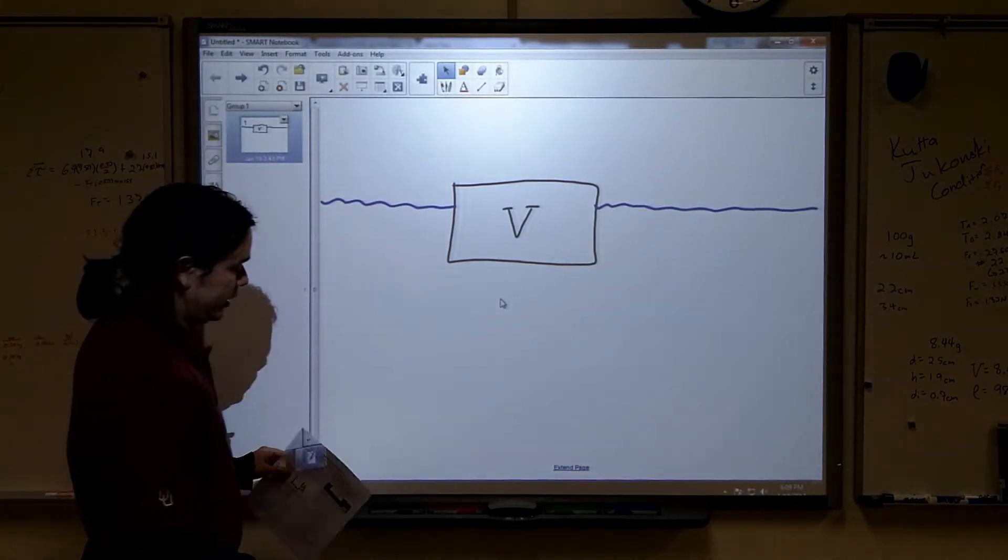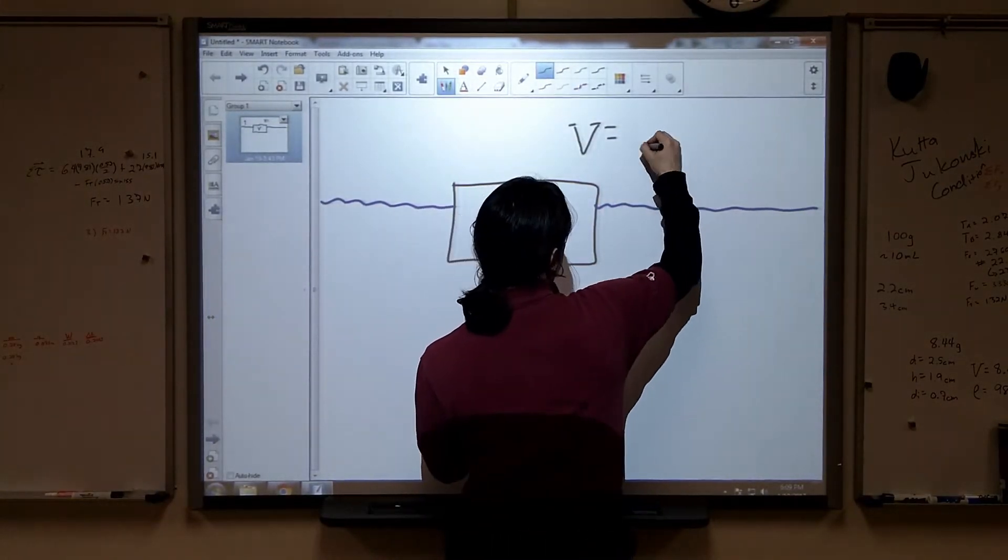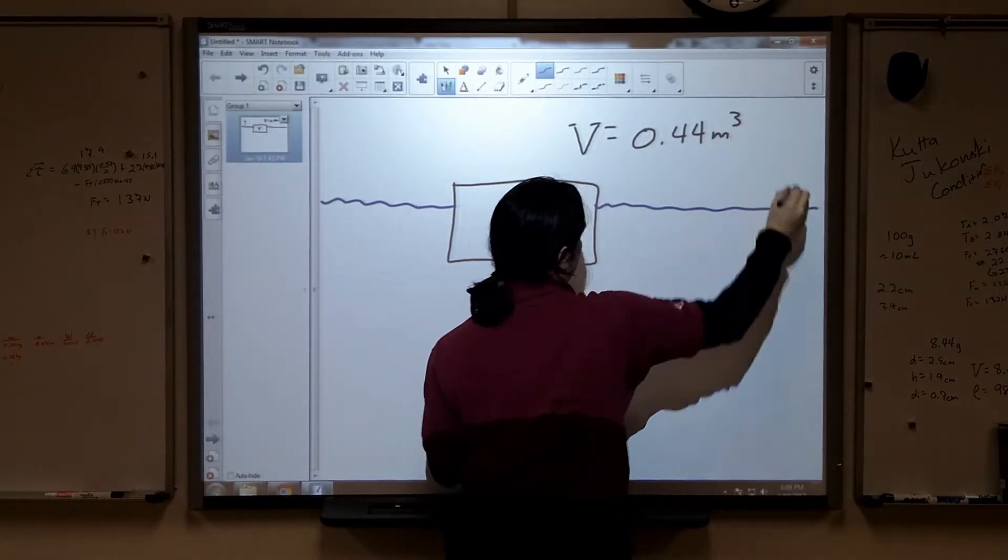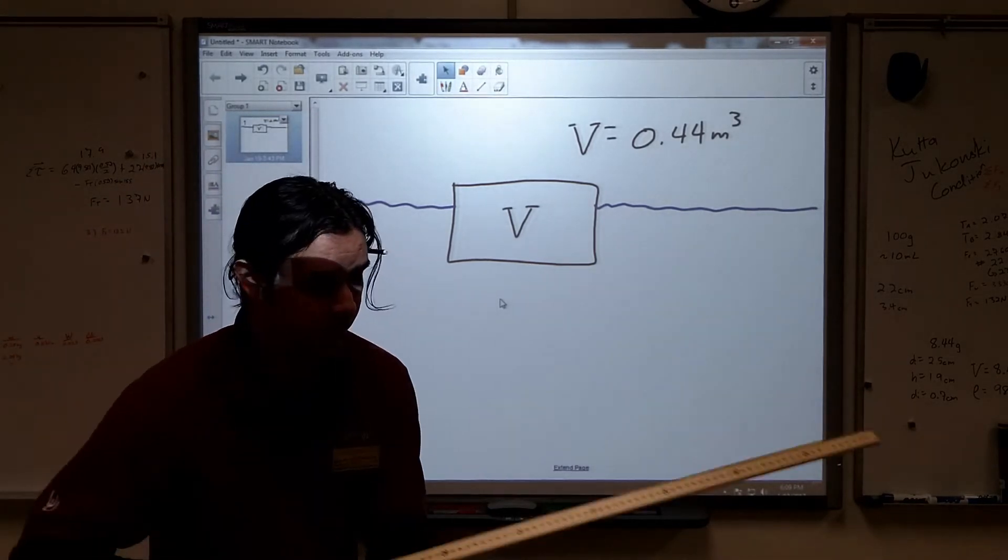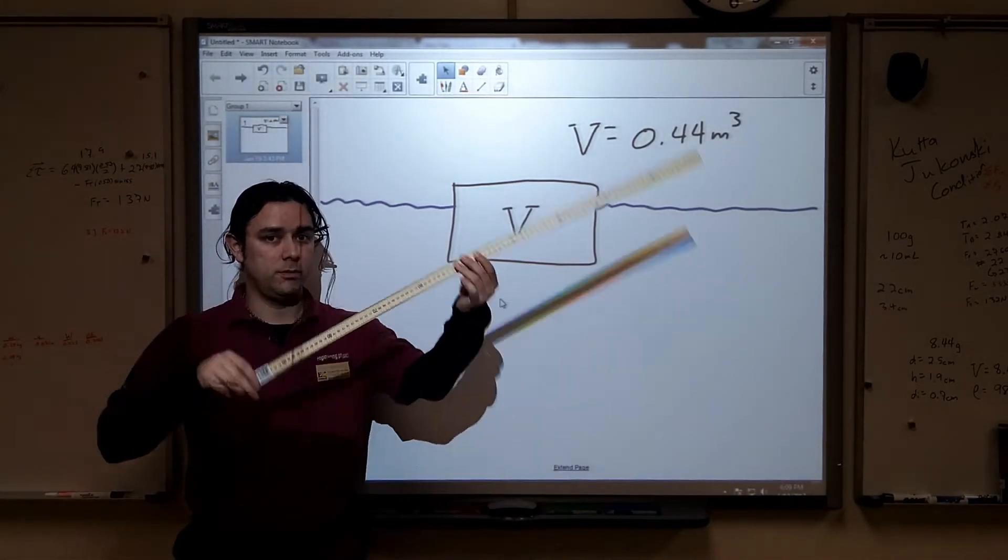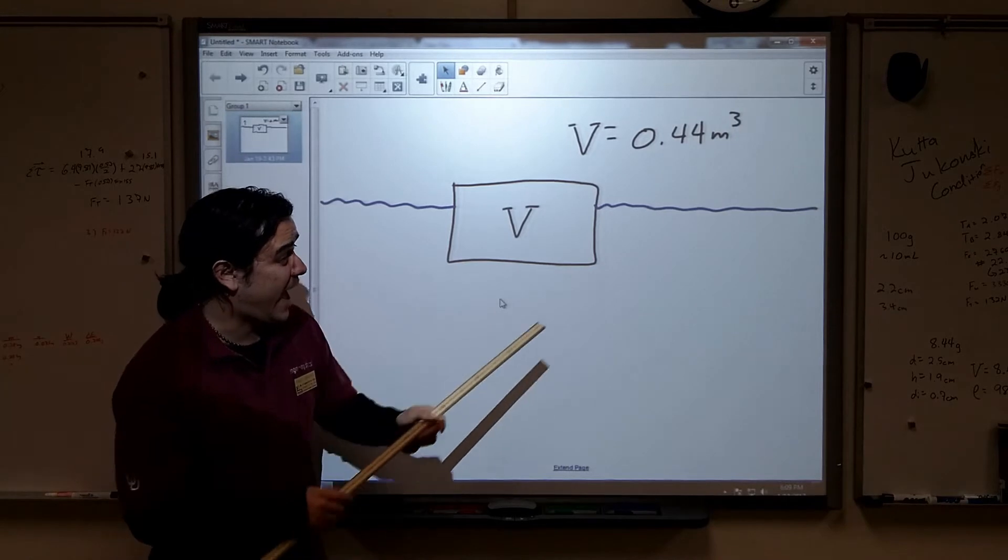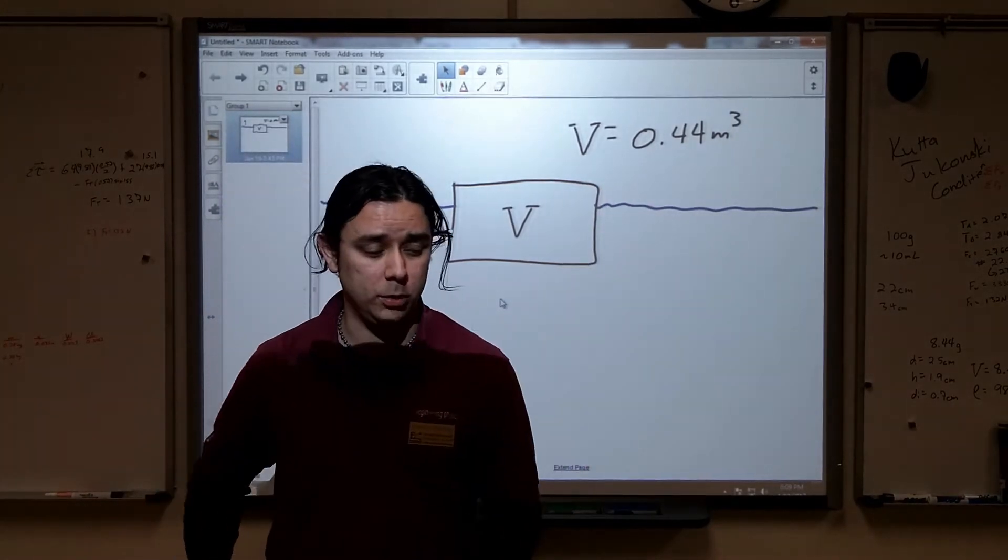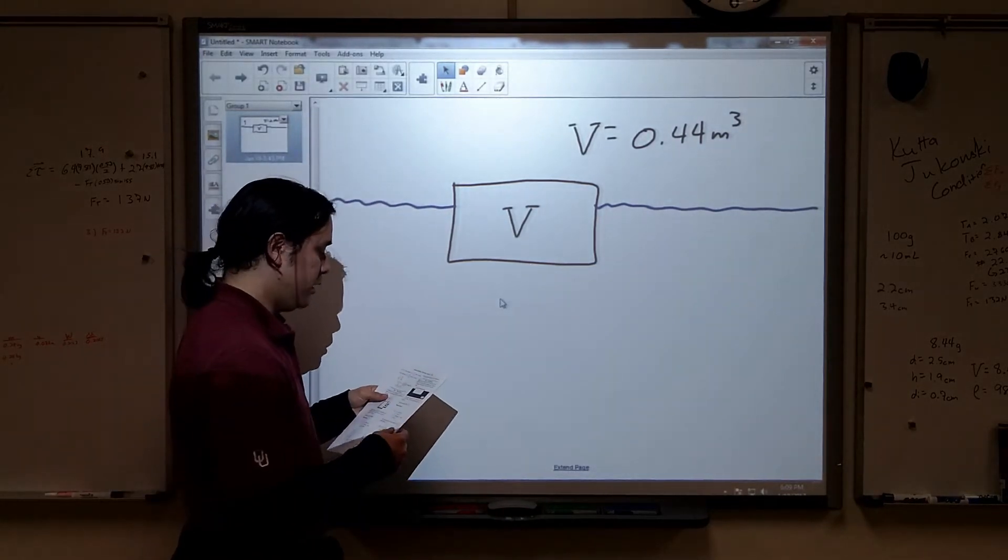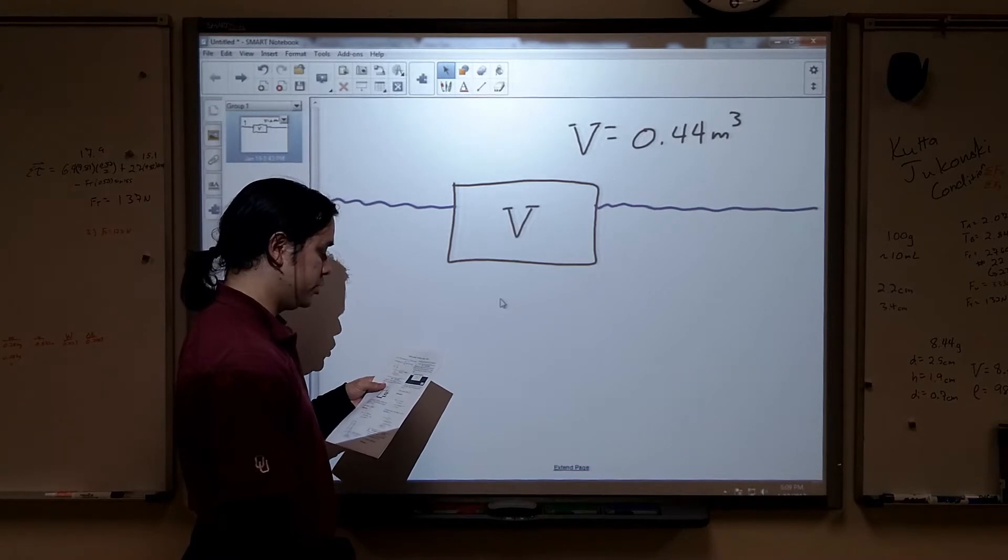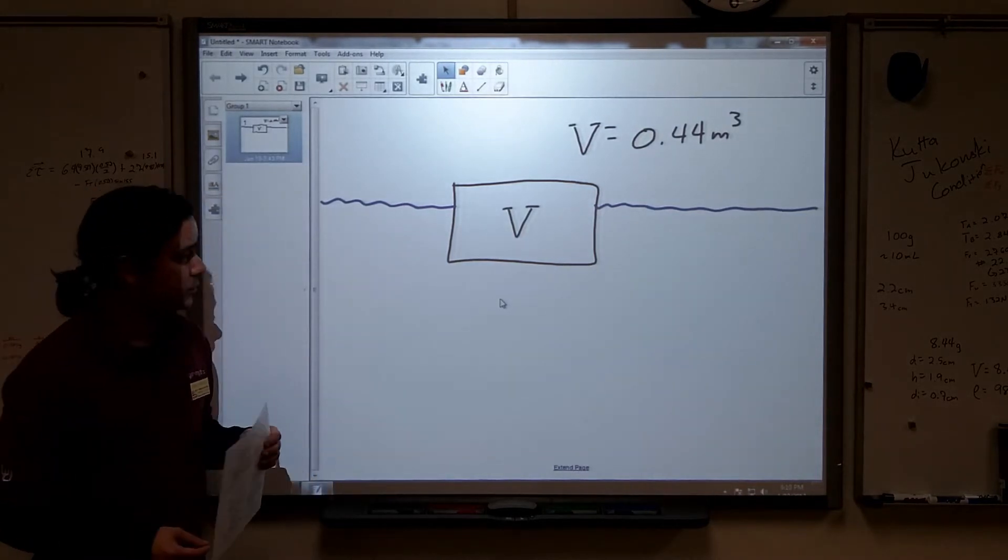We've got an object here and we're given a little bit of information. The volume of this object, at least with my numbers, is 0.44 cubic meters. That's actually pretty large. Imagine one meter by one meter by one meter. That's a lot of space. This is about half of one cubic meter, so this thing's actually pretty big. It floats with a fraction of its volume submerged in a liquid of density 1,180 for my numbers, as shown in the figure.